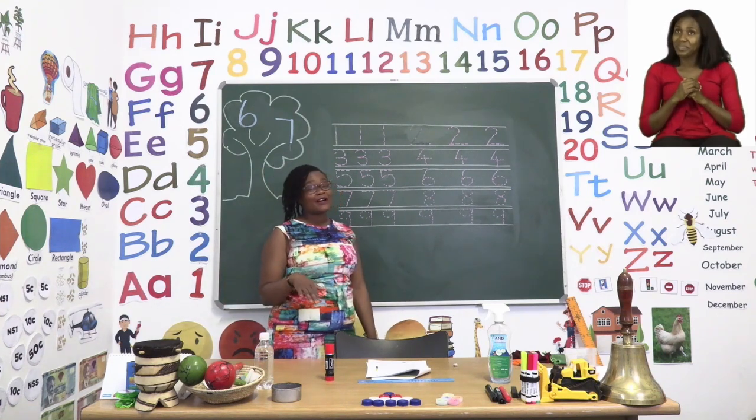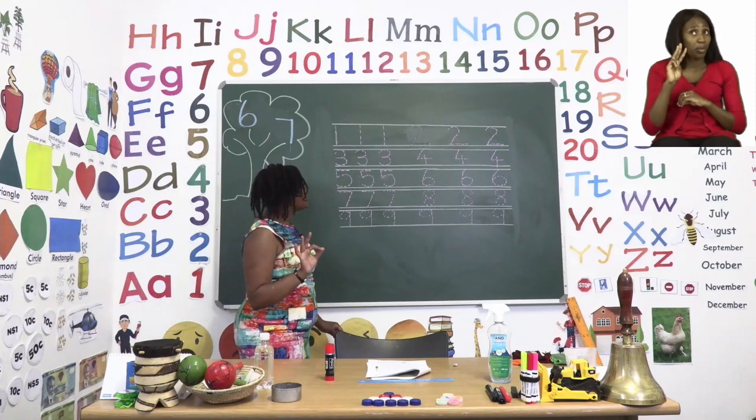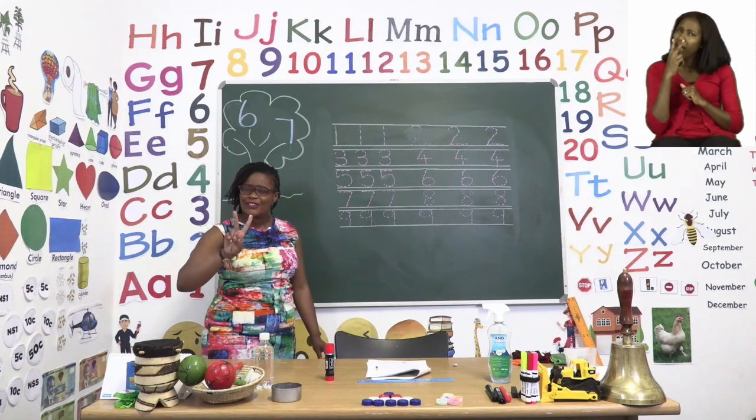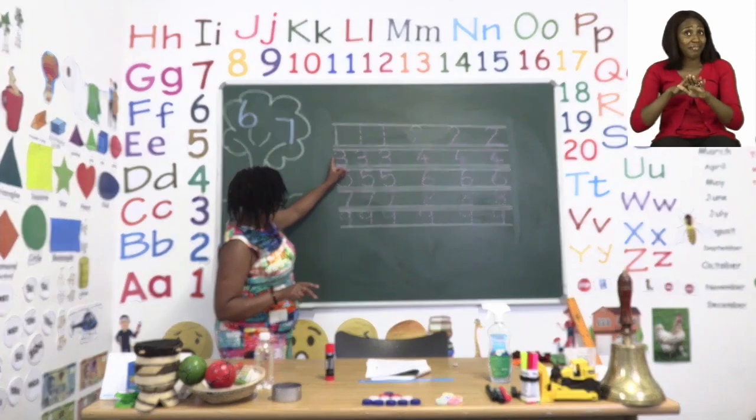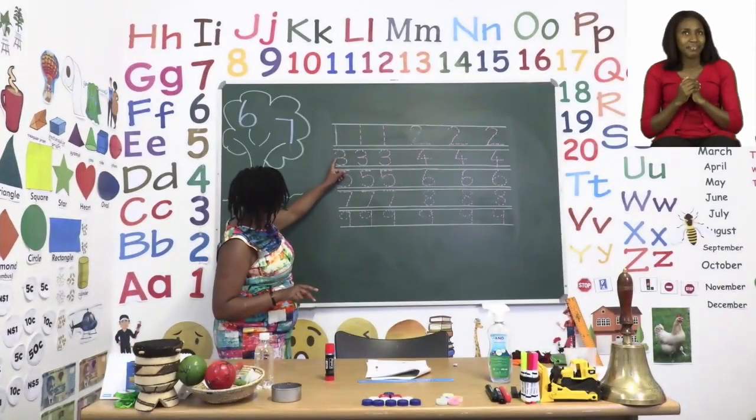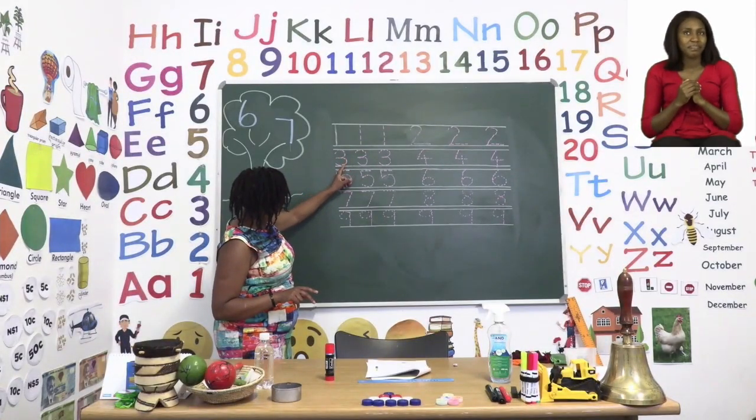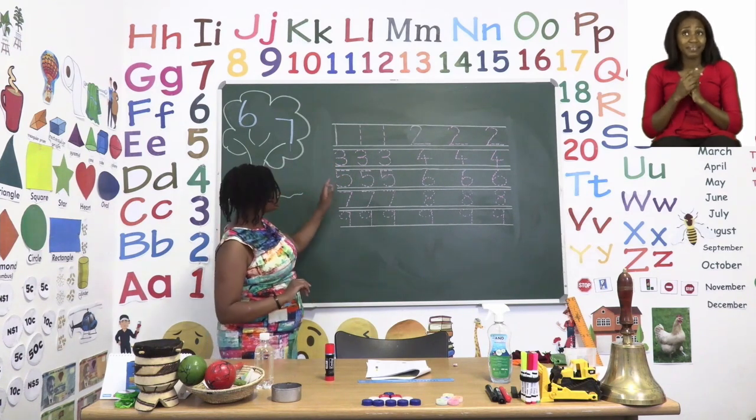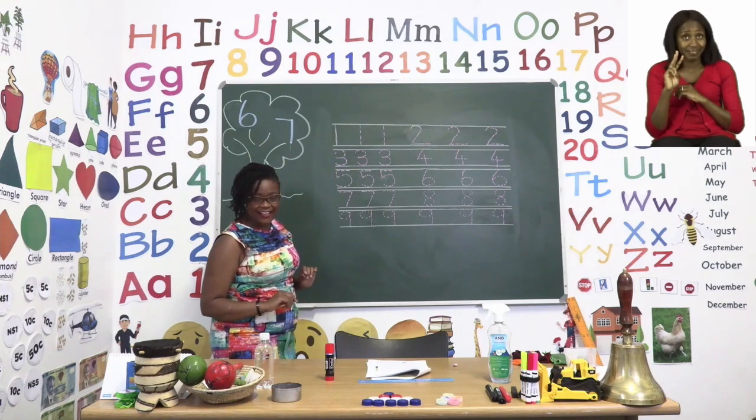Let's take a look at number three. Number three also has a curve, but not just one, two curves. It goes one, comes back two. So it also has a curved head and curved legs as well.